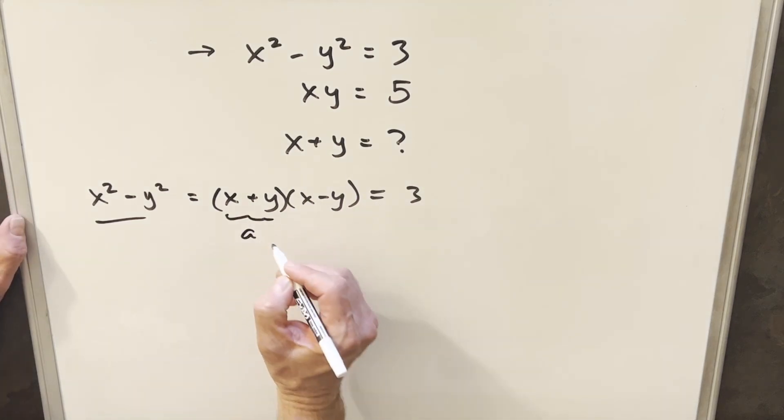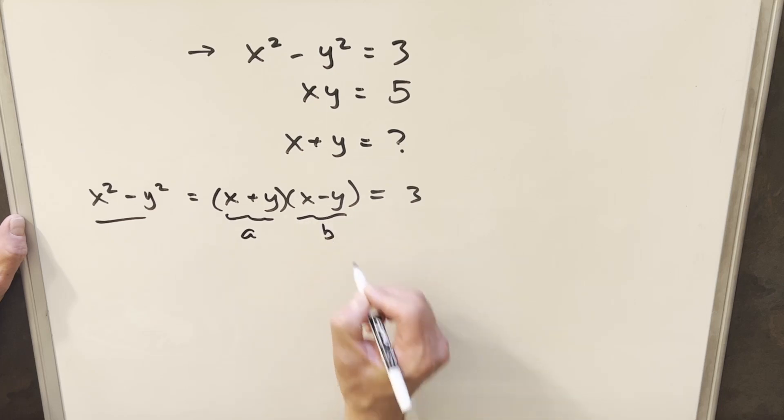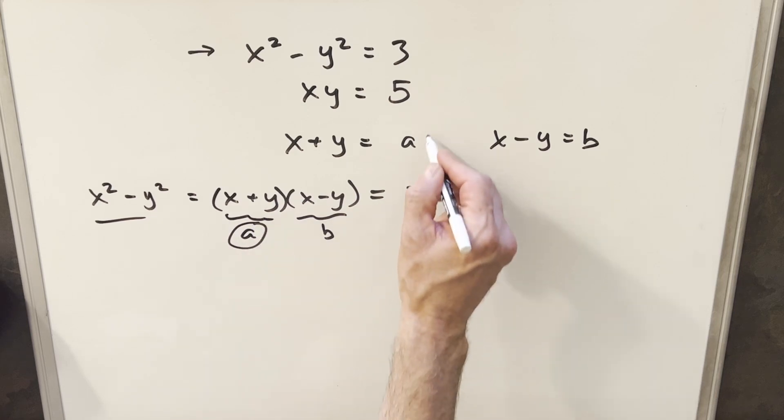And I'm just going to label these. I'm going to call x plus y equal a. I'm going to call x minus y equal to b. And we'll just notice a is the thing we want to solve for.